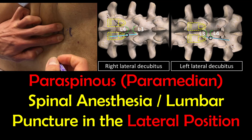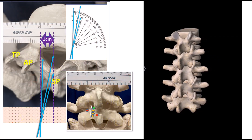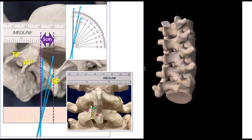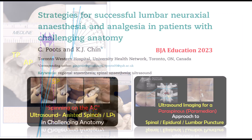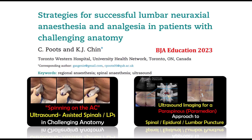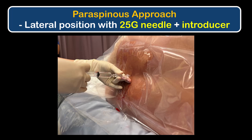This video is a brief refresher on how to perform a surface landmark guided paraspinous approach to lumbar puncture and spinal anesthesia in the lateral position. A good mental model of spinal anatomy and the geometrical principles involved is critical for success. See the links in the description for a definitive review article and other videos demonstrating how to use ultrasound imaging to guide the paraspinous approach. We'll demonstrate the steps using a 25-gauge needle with an introducer.